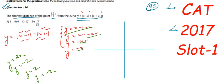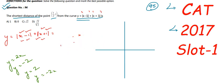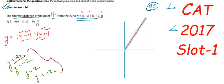Now let's plot the graph. For y = 2x: when y is 0, x is 0, so our first point is the origin. When x = 1, y = 2, and so on. So the graph of the first equation is a line through the origin with slope 2.